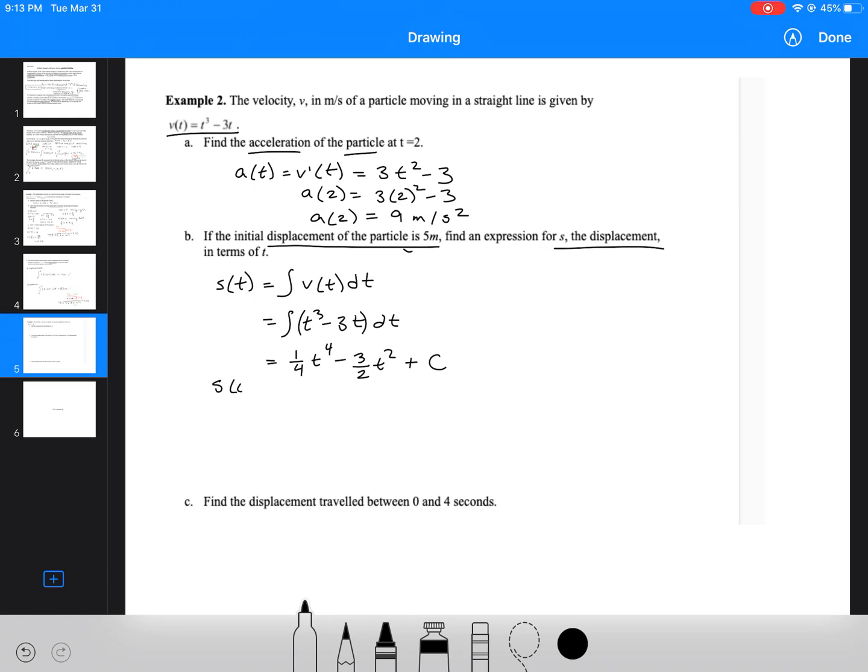Now we're going to use our initial conditions. We know that the initial displacement is equal to 5, which means that when I plug in t equals 0, I get that 5 equals c. So therefore, my expression for s(t) is 1 over 4 t to the 4 minus 3 over 2 t squared plus 5.